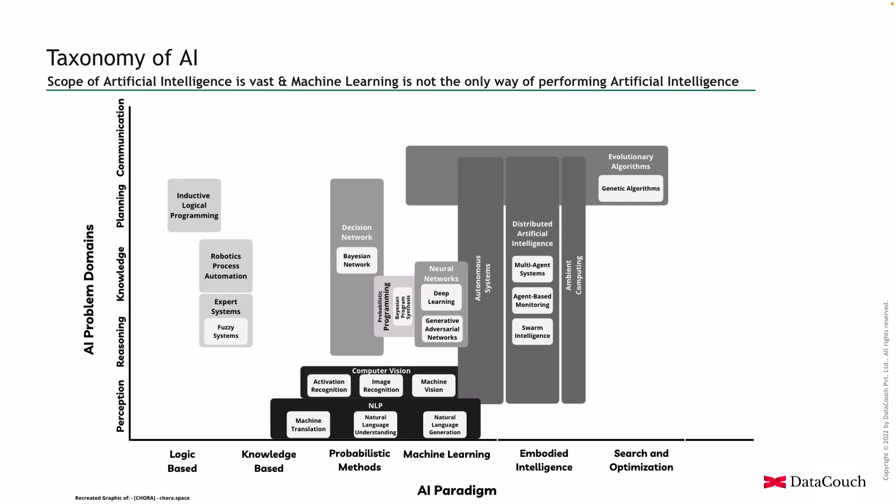On the x-axis we have AI paradigms, which are basically approaches used by AI researchers to solve specific AI-related problems. On the y-axis we have AI problem domains — these are historically the types of problems that artificial intelligence could solve, indicating the capabilities of AI technology.